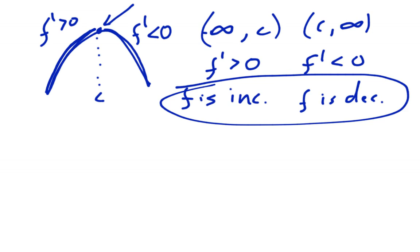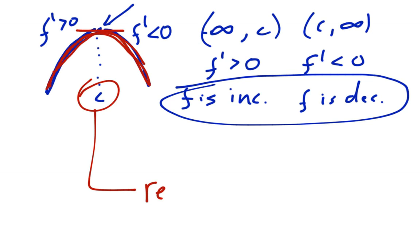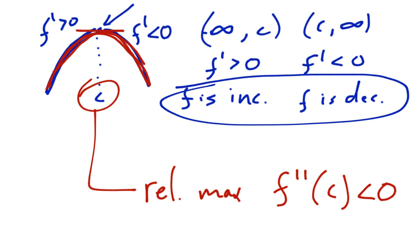The second derivative test uses a similar argument. We still note that x equals c is where the relative maximum occurs, but in the second derivative test we look at the second derivative of the function. This is a critical number because the tangent line slope is zero. And if we notice the concavity at this point — see how the function has a concave down appearance — at a relative maximum, f double prime of c will be negative.